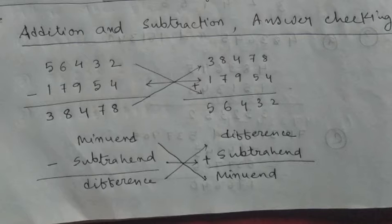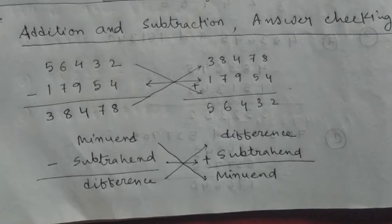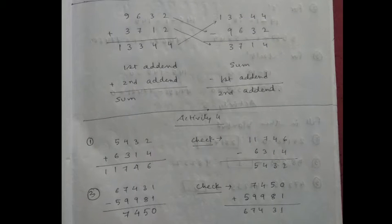So: 38,478 plus 17,954 equals the minuend 56,432. We get 56,432, which is the same as the minuend. So the checking is complete and verified. Next, for addition.